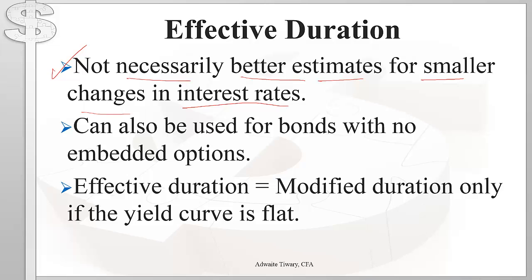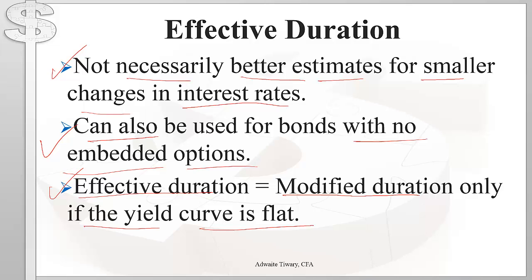Effective duration can also be used for plain vanilla bonds with no embedded options. However, effective duration is only equal to modified duration if the yield curve is absolutely flat — so generally, effective duration differs from modified duration.